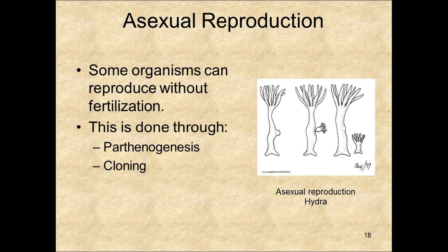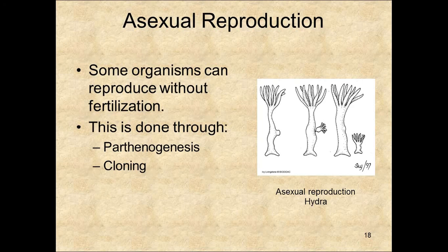There are two types of cloning. The first is budding, where offspring begin as a growth on the body of the parent; when fully formed, they break off and form a separate individual — for example, the hydra. In fragmentation, a part breaks off of the parent and that part will grow into a new individual, such as tapeworms and starfish. This is the end of Chapter 11, Meiosis.